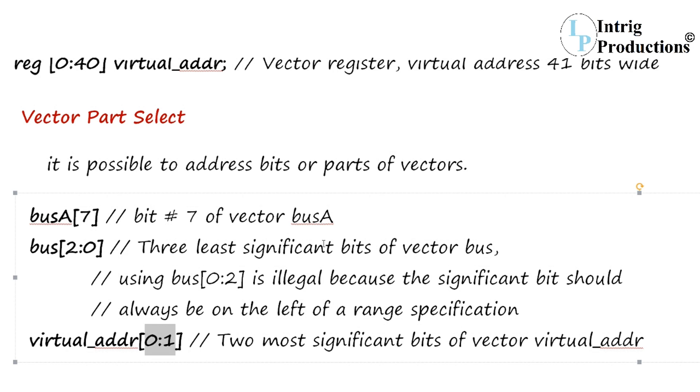The virtual_addr which was previously declared as a 41-bit vector is now accessed for only two bits. So this is how the vector part select concept is explained.